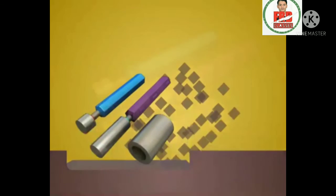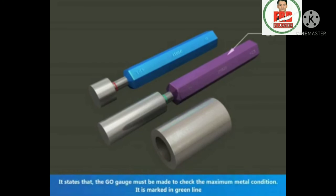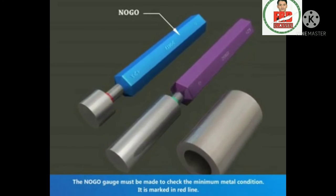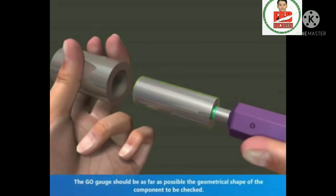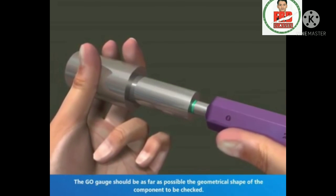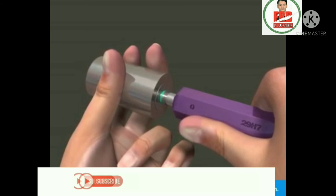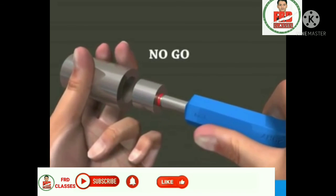Taylor's principle: the go gauge must be made to check the maximum metal condition, marked in green. The no-go gauge must be made to check the minimum metal condition, marked in red. The go gauge should be as far as possible the geometrical shape of the component to be checked. This also checks the straightness or parallelism of the hole over its full length. For circular holes, the no-go gauge should be a pin gauge.